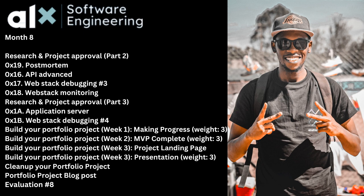When you start month eight, you have research and project approval part two. They ask you for more details on the project you want to undertake, and you fill in answers to their questions and expand on the project idea. This is the project you're going to present at the end, so there are no do-overs. If you pick a project that is too difficult to implement, it will cost you in the final grading, and you won't be able to get the maximum score.